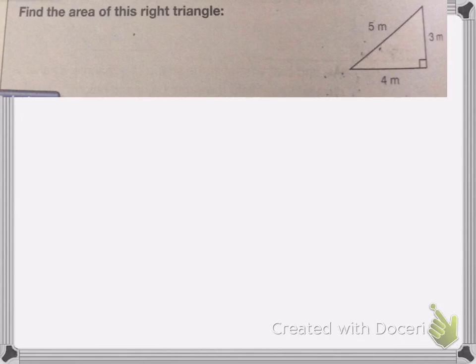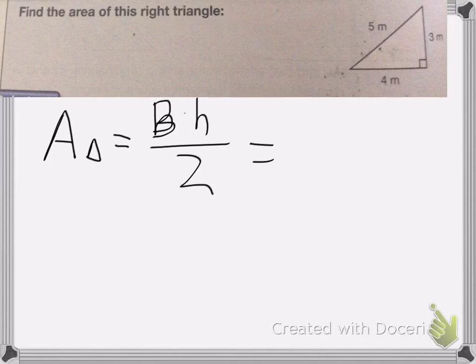So the two sides I'm going to do, again, my area of the triangle equals base times height divided by 2. So let's put in the numbers, my base is 4, my height is 3, that's a perpendicular height, so 4 times 3 divided by 2.